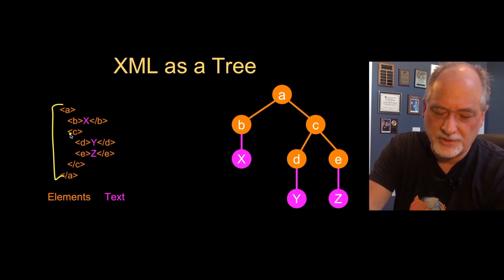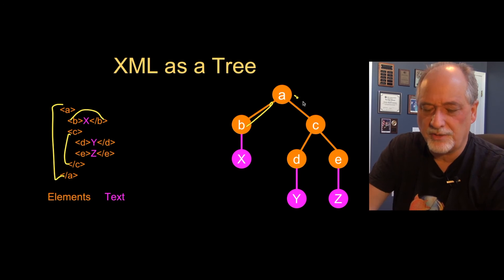It has two children. The C tag and the B tag are two children. So the B tag is a child of A, and then C has a D and an E tag that are children there.